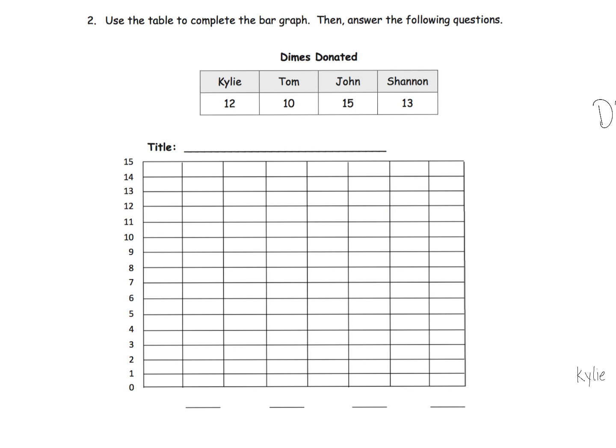And once again we've got our data, this time it's dimes donated. And we have our empty bar graph, in this case it's a vertical one. And I'm going to bring in the information that I've already kind of pre-filled in. So we've got dimes donated, which is generally the same as the table. And then we've got our four categories—in this case it's Kylie, Tom, John, and Shannon. And now we're going to graph.